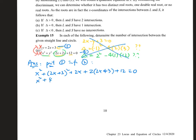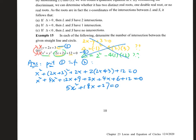Then expand it: 4x² + 12x + 9 − 4x − 6 + 12 = 0, and after simplifying it becomes 5x² + 18x + 27 = 0. Now we can start applying delta to this combined quadratic equation.